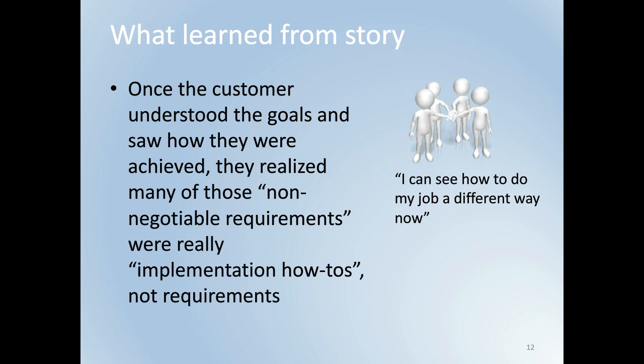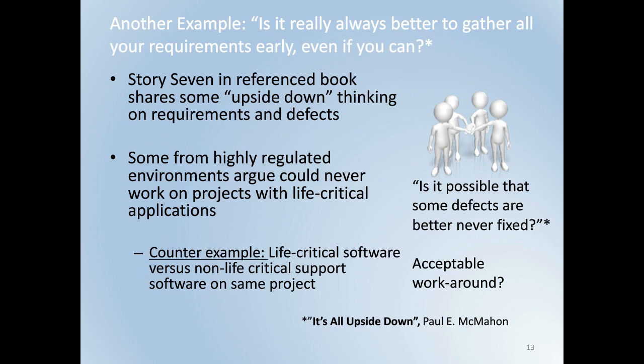What we learned from this story is that once the customer understood and agreed to the goals, they also realized that many of what they previously viewed as must-do requirements were just implementation approaches they were used to from a legacy software product. As they learned how to do their job with the new product, they realized many of those firm must-do requirements were not really needed. So the point is that when you're applying agile methods the right way, often you find that what you think are firm requirements are not. This is an important aspect of agile that can help address Gates' point about the 99% solution. Let me now give you another example from my 'It's All Upside Down' book that also relates to Gates' point.